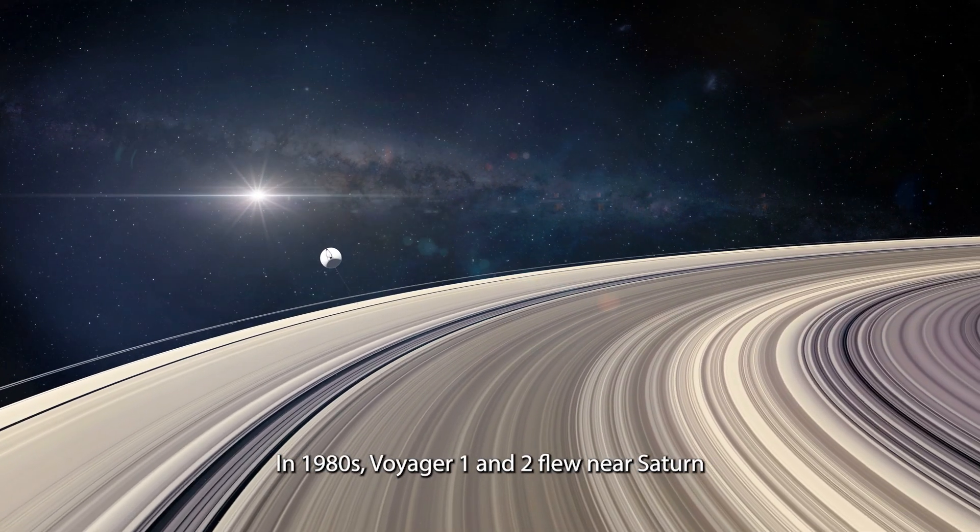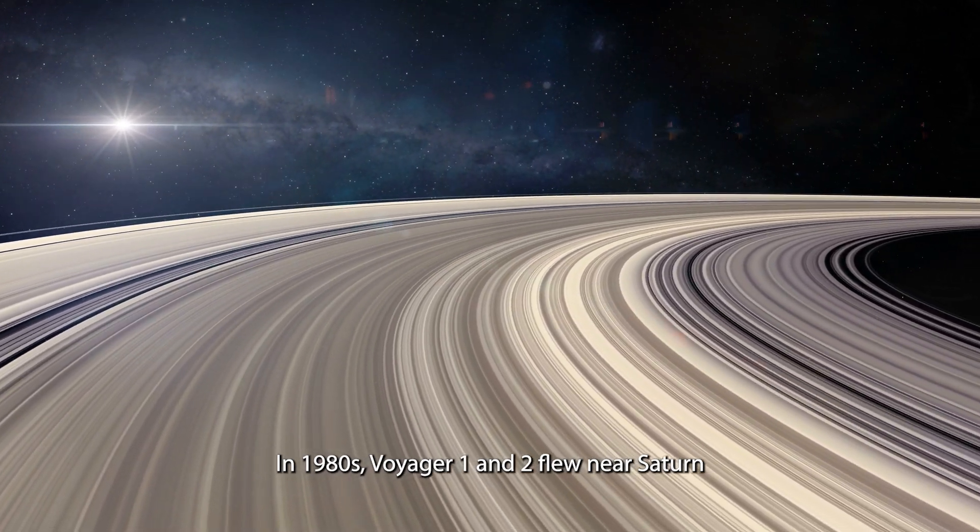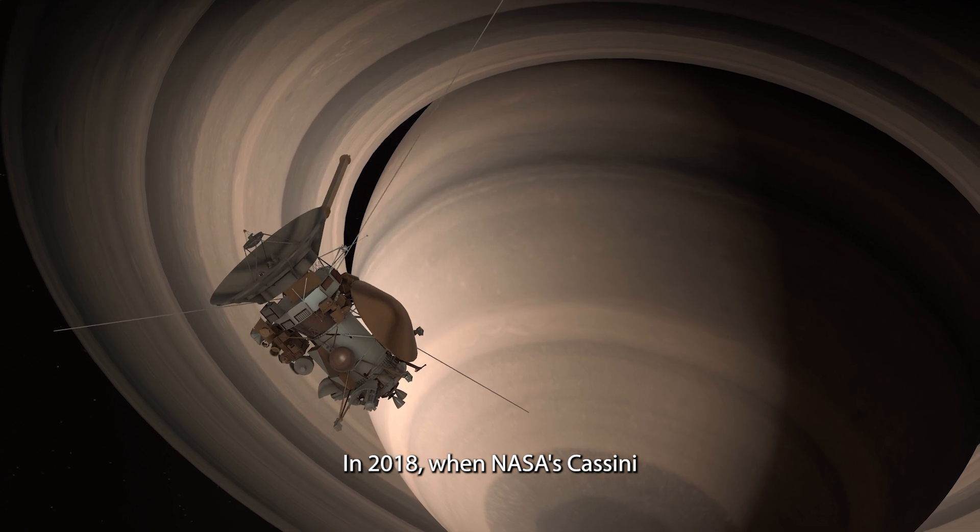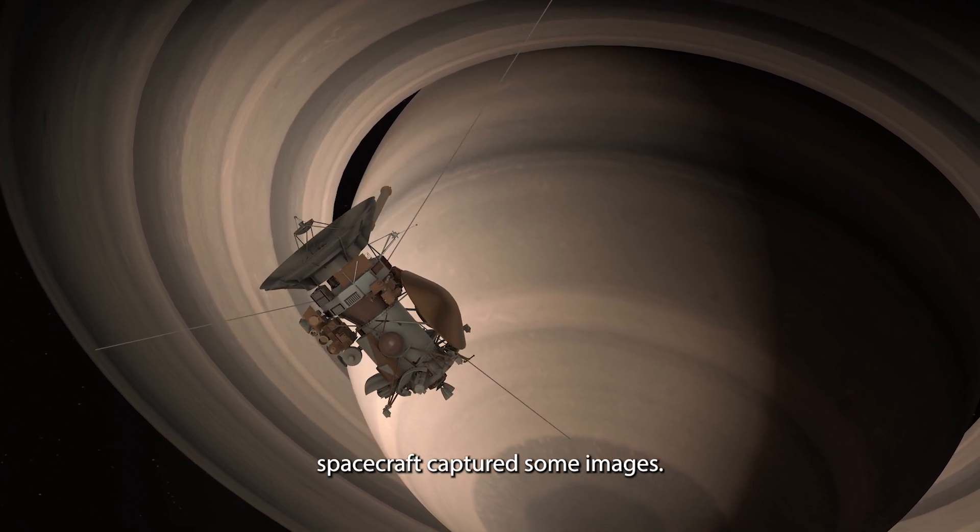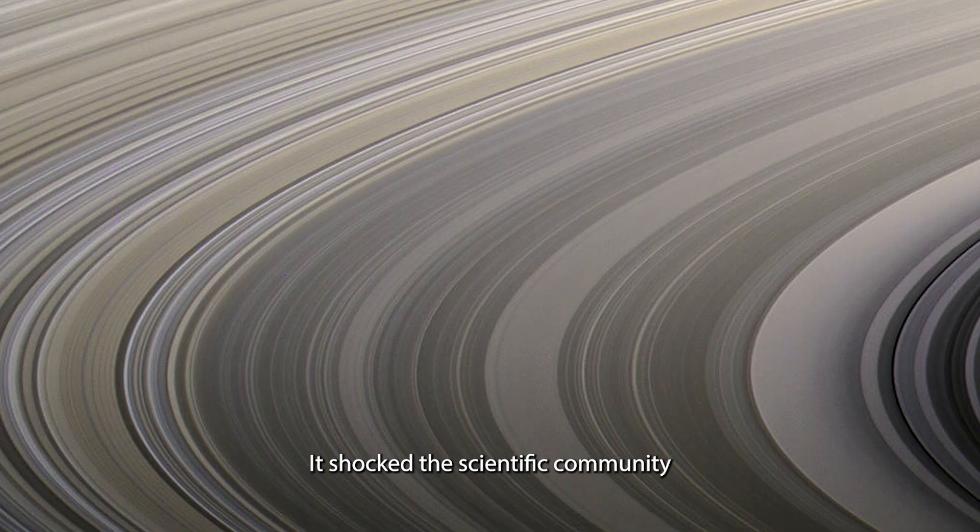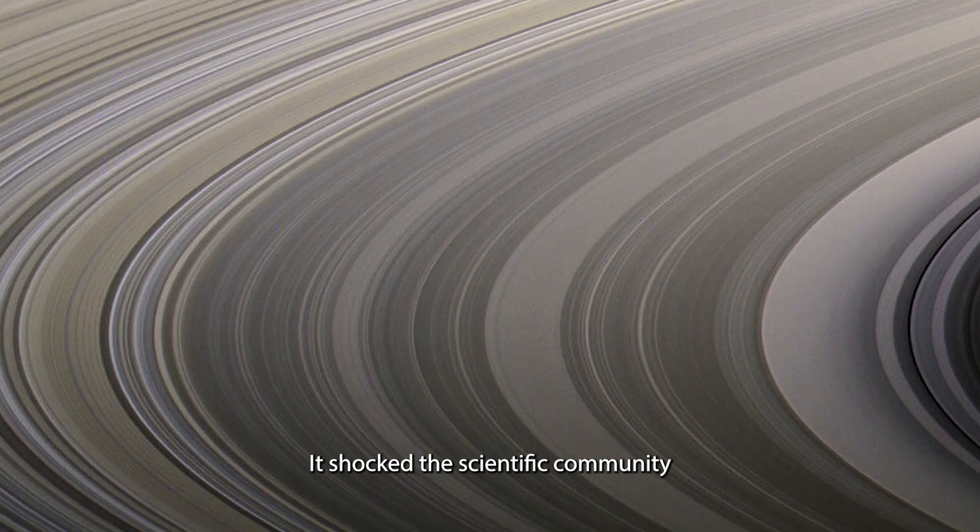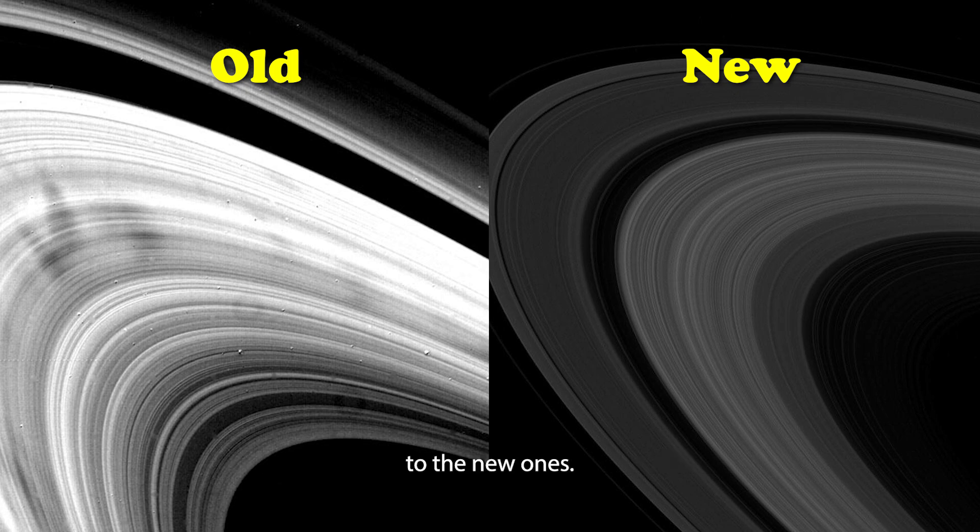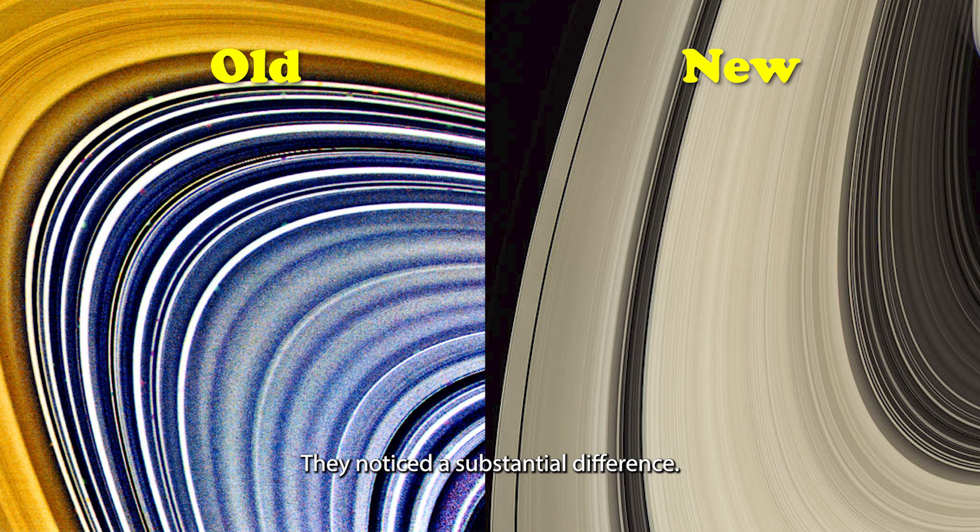In the 1980s, Voyager 1 and 2 flew near Saturn and sent back its images. In 2018, when NASA's Cassini spacecraft captured some images, it shocked the scientific community. When scientists compared those decades-old images to the new ones, they noticed a substantial difference.